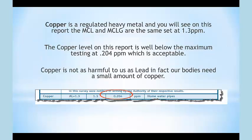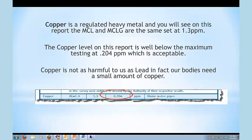Copper is the next regulated heavy metal that we're going to talk about. On this report, you'll see that the MCL and the MCLG are the same, set at 1.3 parts per million. The copper level on this report is well below the maximum, testing at 0.204, which is an acceptable level. Copper is not as harmful to us as lead — in fact, our bodies do need a small amount of copper.